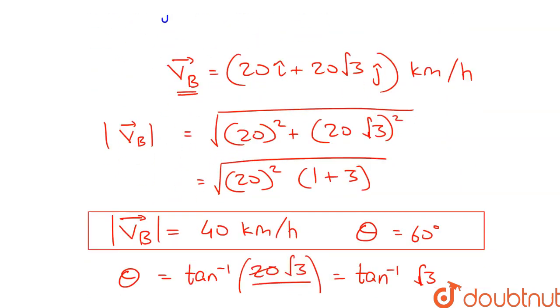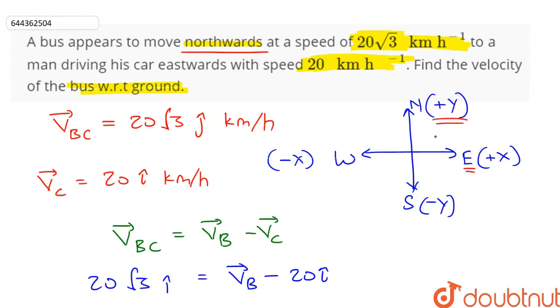So this is the angle made with the positive x direction, that means this will be the direction of VB vector and this angle is given to us as 60 degrees.